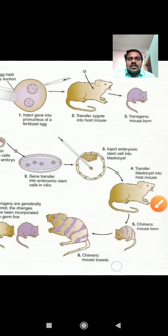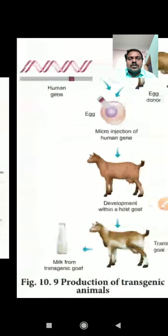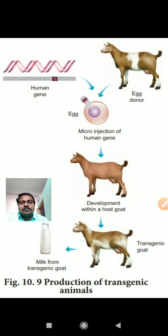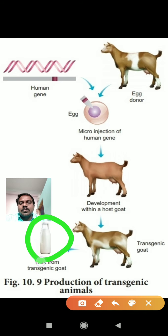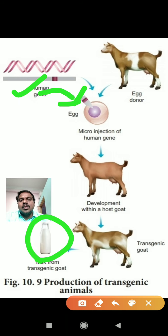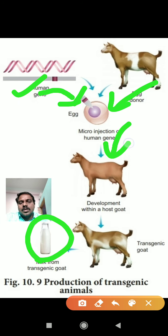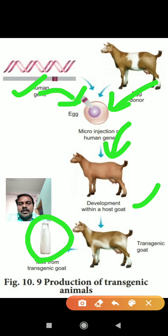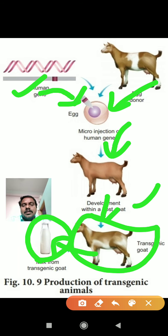In another example, consider the goat. In goat milk, we want to produce a highly protein content. For that, a human gene is used and induced to produce highly proteins in milk. This gene is inserted into the donor egg nucleus, and that embryo is transported into the host goat. After development is complete, the host goat gives birth to a transgenic goat that produces high-protein milk.